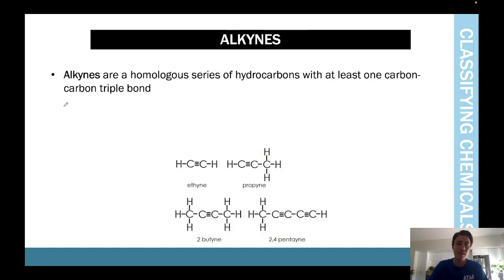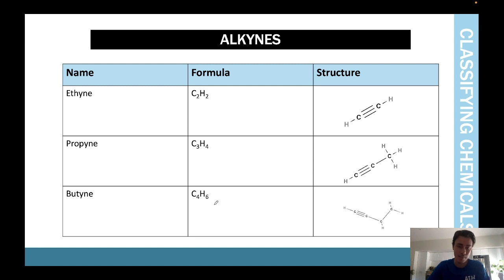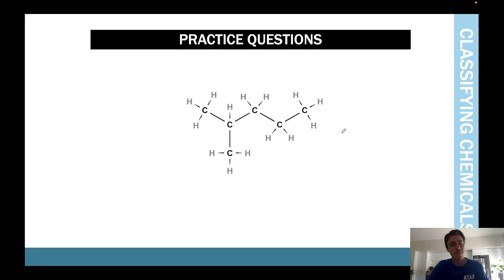Alkynes are the last group — these have triple bonds. Their general formula is CnH(2n-2) because four hydrogens are lost due to the triple bond. The same numbering rules apply; for example, 'but-1-yne' would indicate the triple bond position.